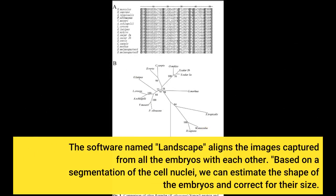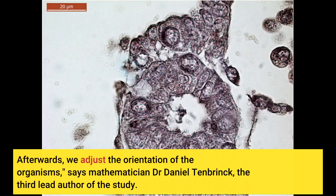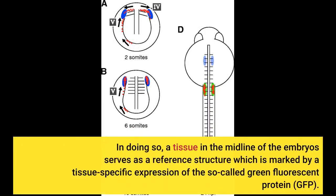The software, named Landscape, aligns the images captured from all the embryos with each other. Based on a segmentation of the cell nuclei, we can estimate the shape of the embryos and correct for their size. Afterwards, we adjust the orientation of the organisms, says mathematician Dr. Daniel Tenbrink, the third lead author of the study. A tissue in the midline of the embryos serves as a reference structure, marked by a tissue-specific expression of the so-called green fluorescent protein (GFP). In technical jargon, the whole process is called image registration.